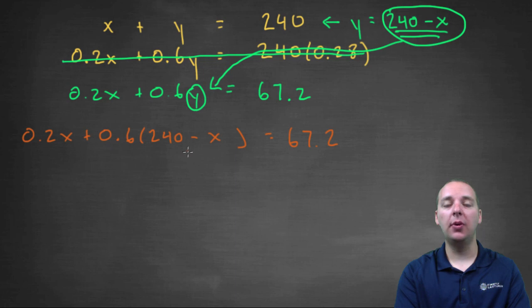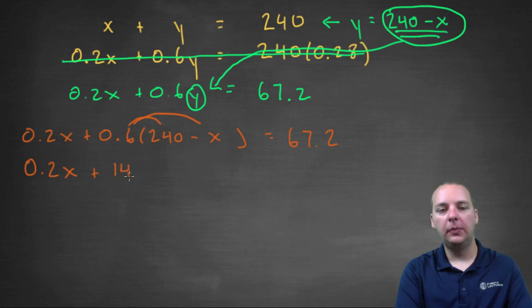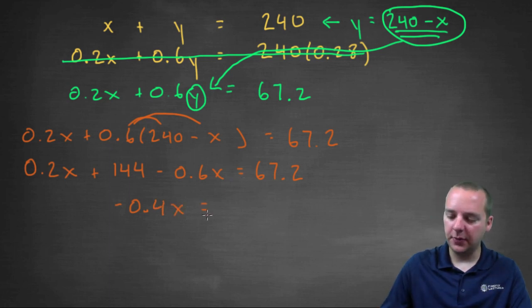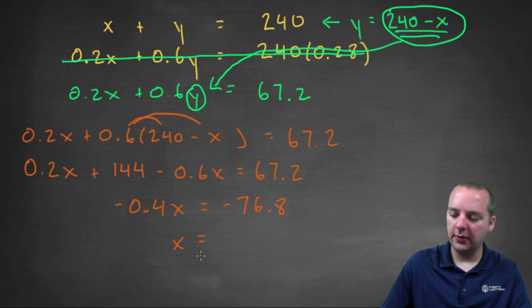This is great. The orange equation just has one variable, it just has x's. So if we can solve for x, we'll be most of the way done with the problem. So let's distribute the 0.6: 0.2x plus, and then we'll have 0.6 times 240, we'll get 144, minus 0.6x equals 67.2. Combine like terms: minus 0.2x minus 0.6x makes minus 0.4x equals 67.2 minus 144. That will give us negative 76.8.